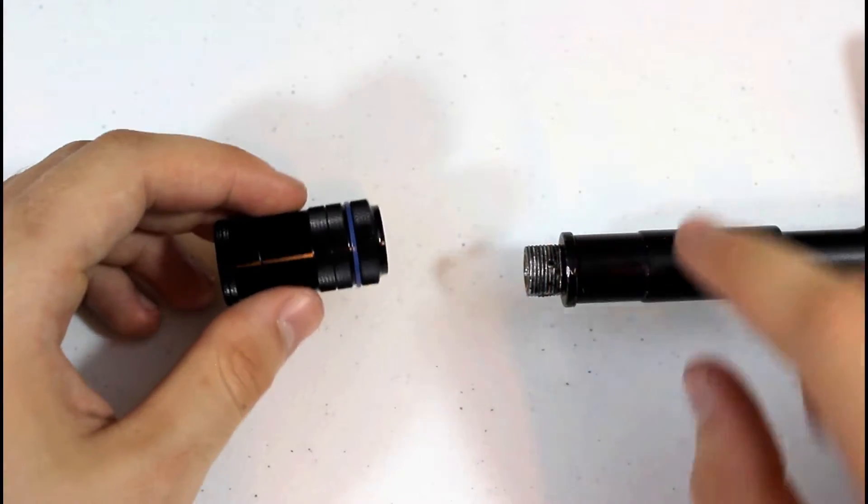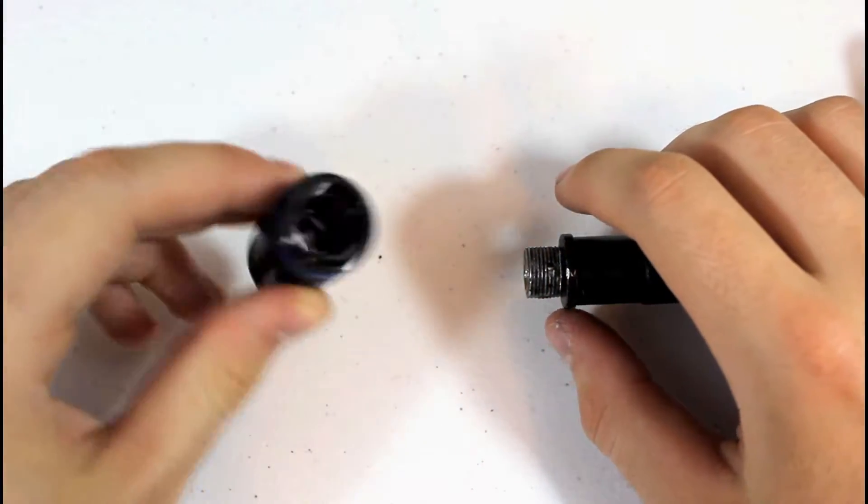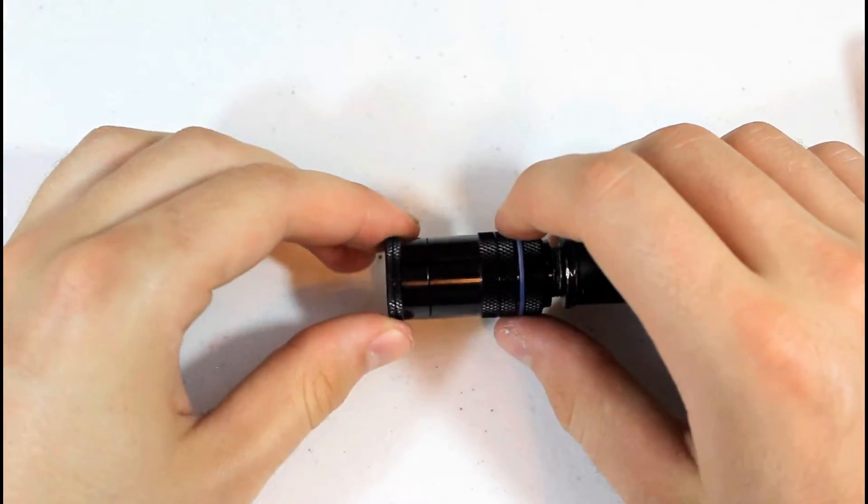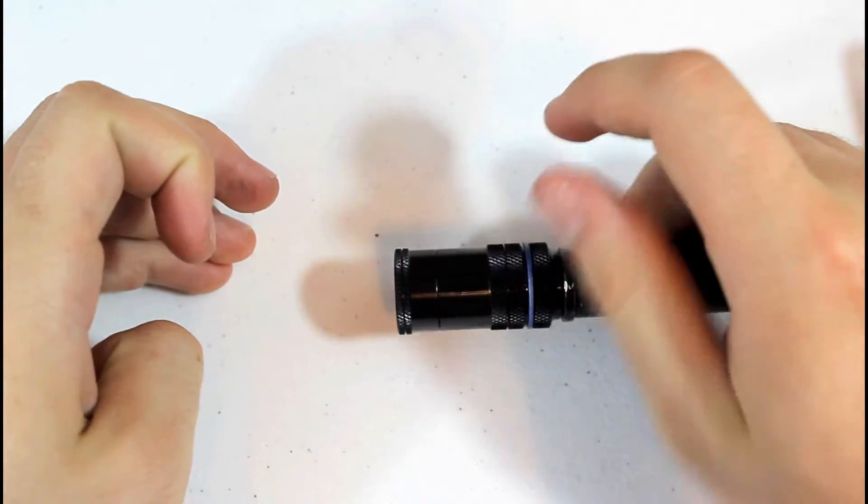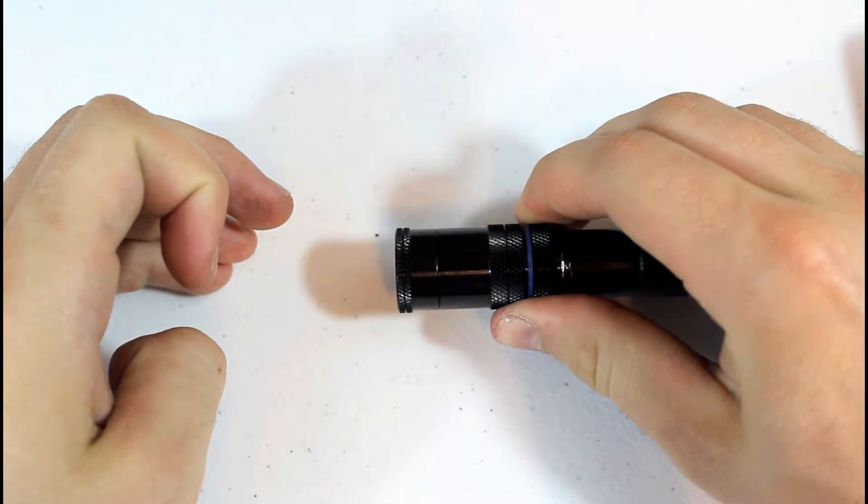With your flash hider or orange tip screwed off of your AEG, you are able to install your muzzle velocity reduction unit. Remember it is counter clockwise, so you're spinning to the left.